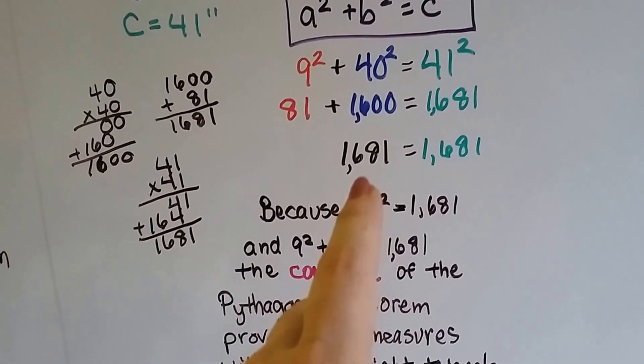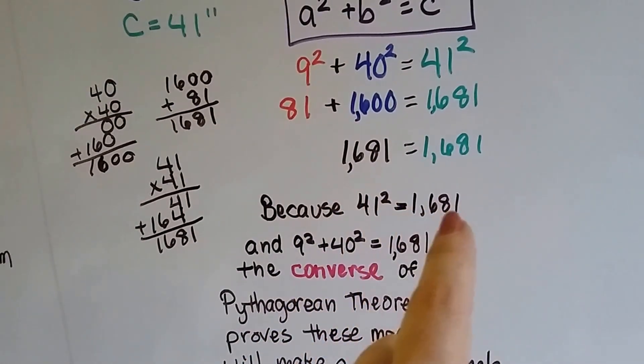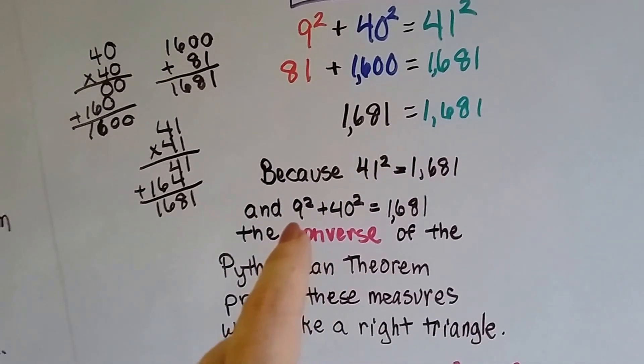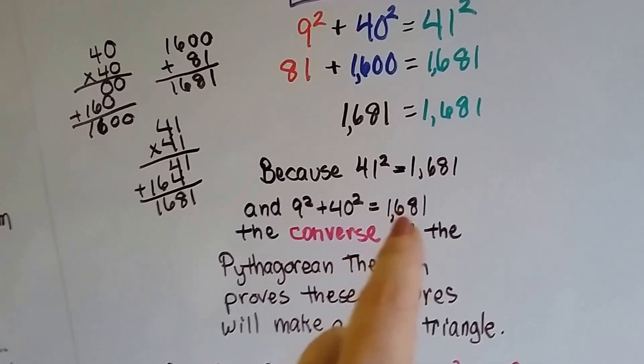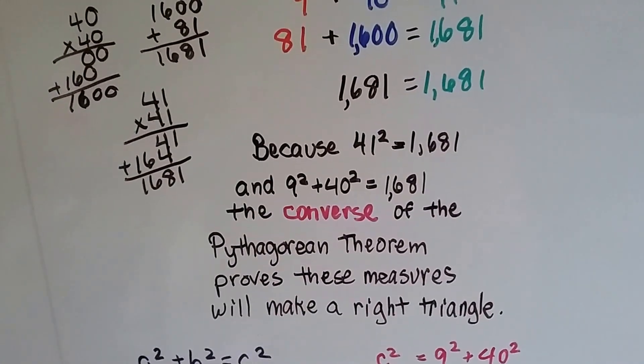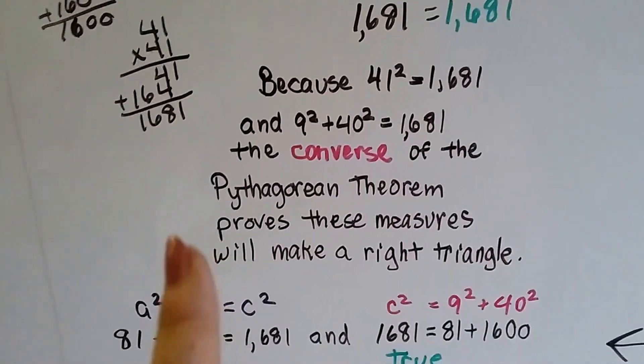Because both sides, 41 squared equals 1681, and the 9 squared plus the 40 squared equals 1681, the converse of the Pythagorean theorem proves these measures will make a right triangle.